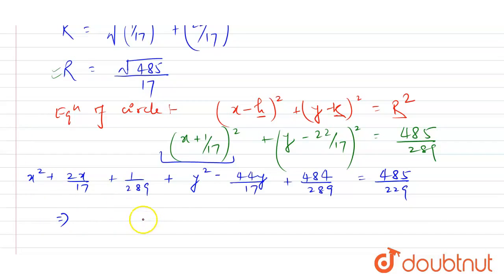Now students, on solving all of these equations by taking LCM, you will be getting the value 17x² + 17y² + 2x - 44y = 0. So students this will be your required equation of the circle. This is your required equation students, thank you so much.